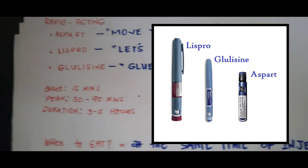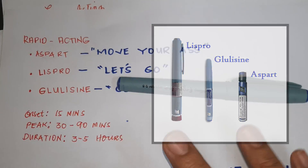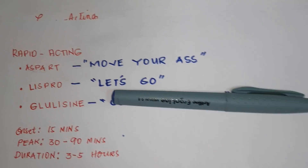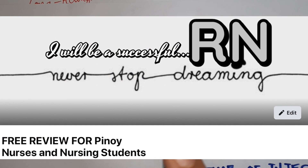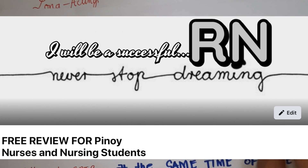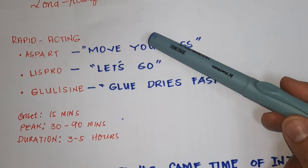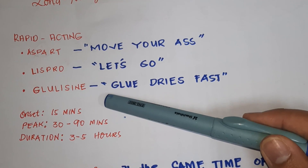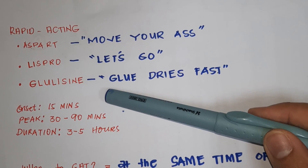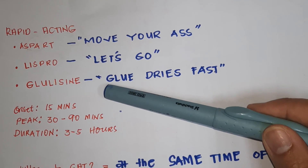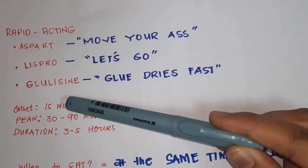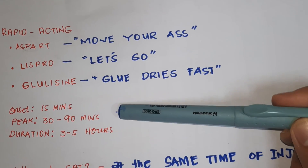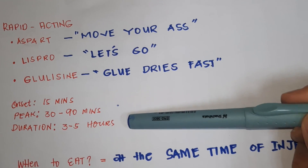The onset of rapid acting insulin is 15 minutes — it works fast. The peak is 30 to 90 minutes, and the duration is 3 to 5 hours. So it acts quickly and also leaves the system quickly.